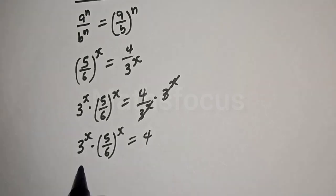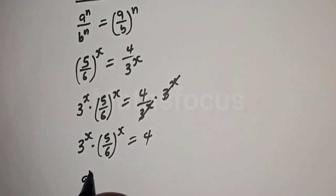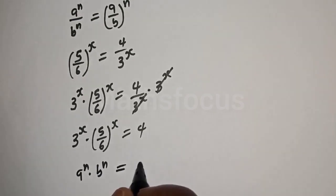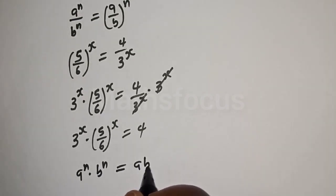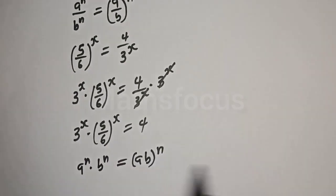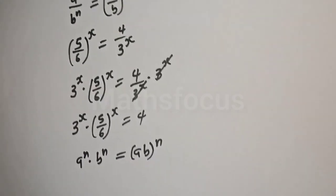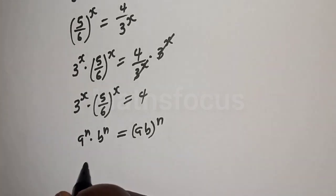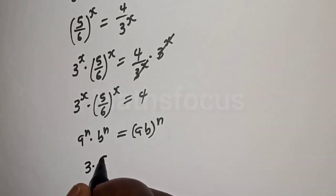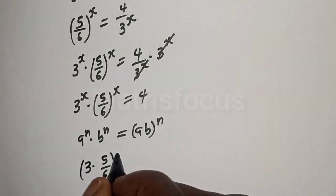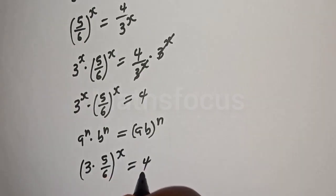Also, take note that if you have a raised to power n multiplied by b raised to power n, this is equal to ab all raised to power n. The left-hand side is 3 raised to power x multiplied by 5 over 6 raised to power x, which equals 4.